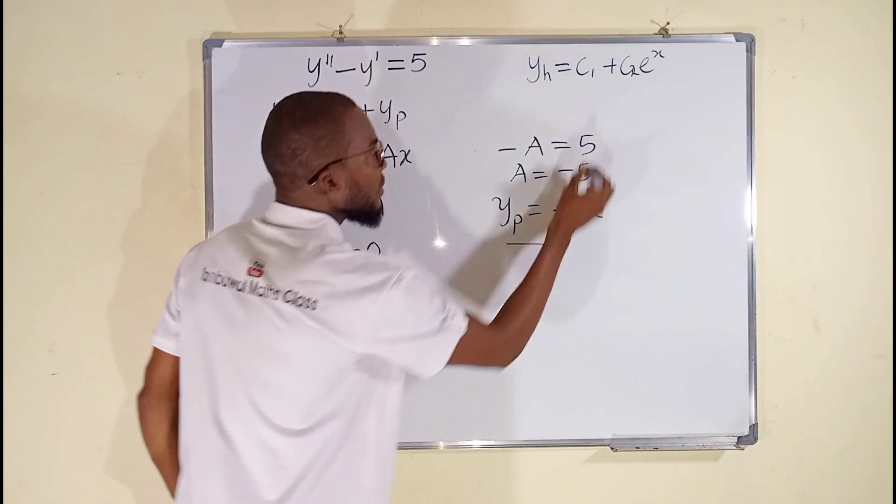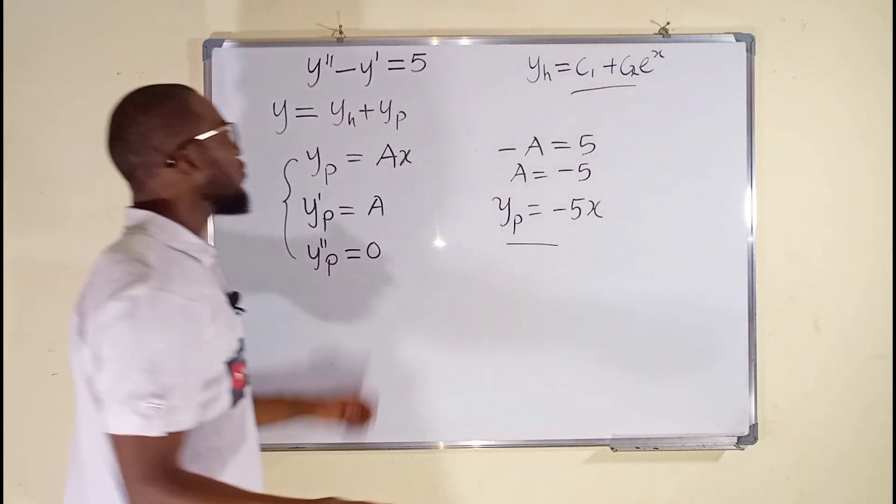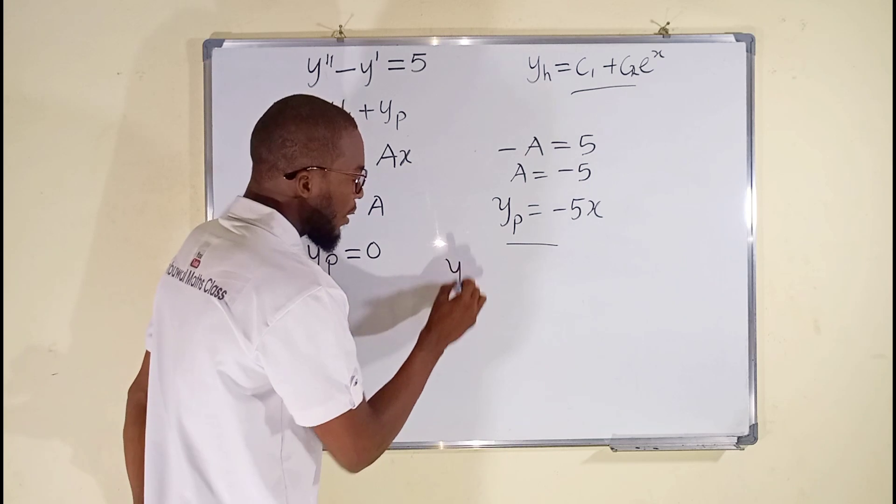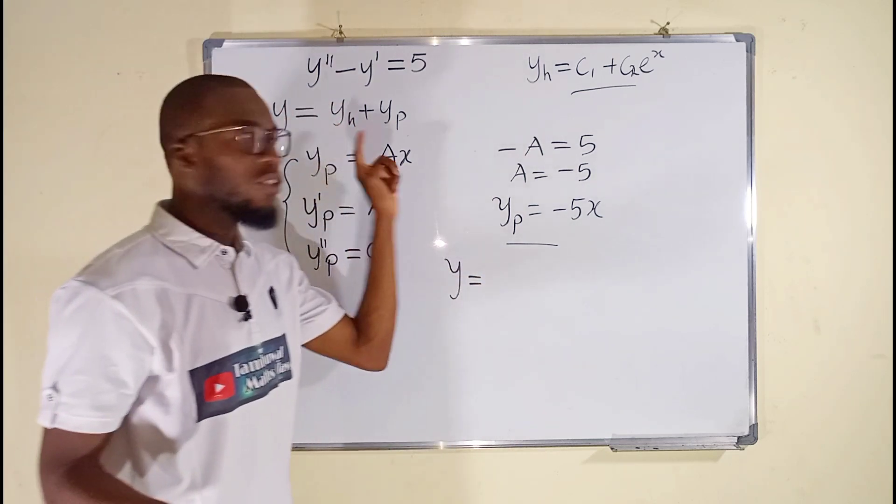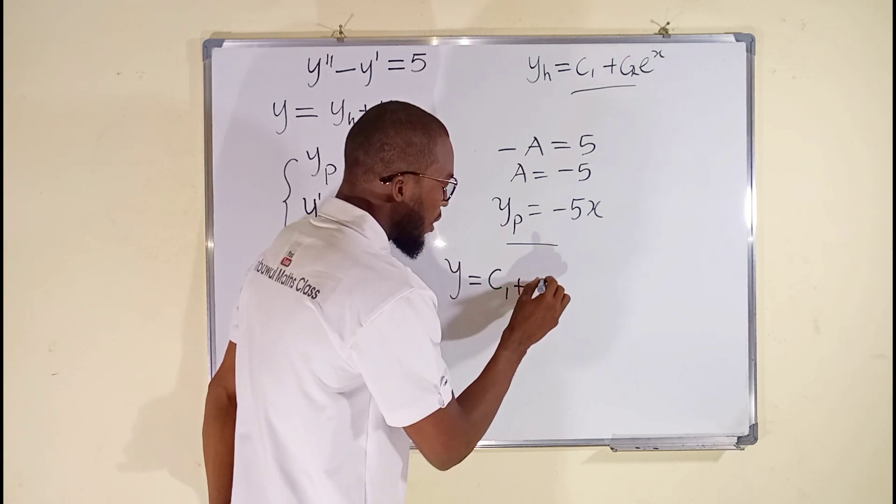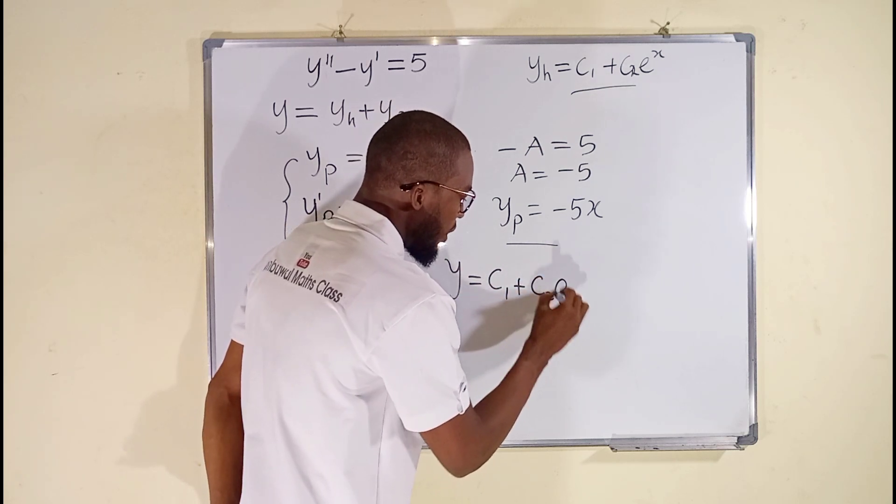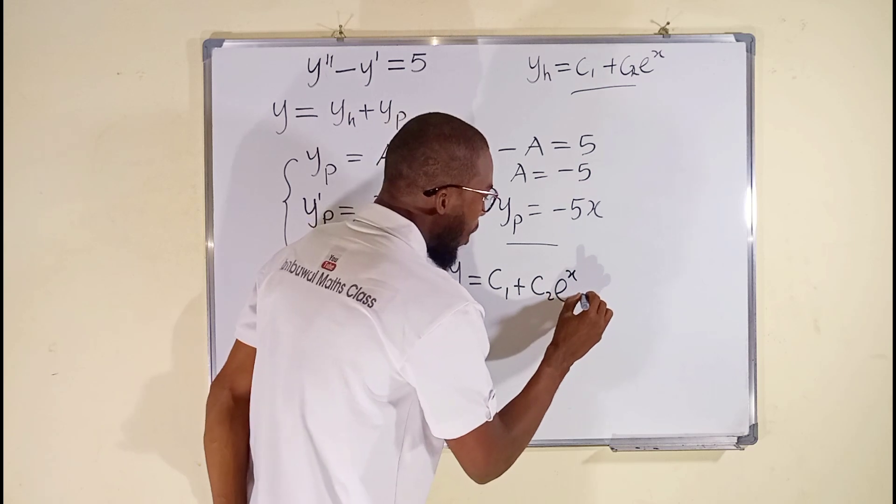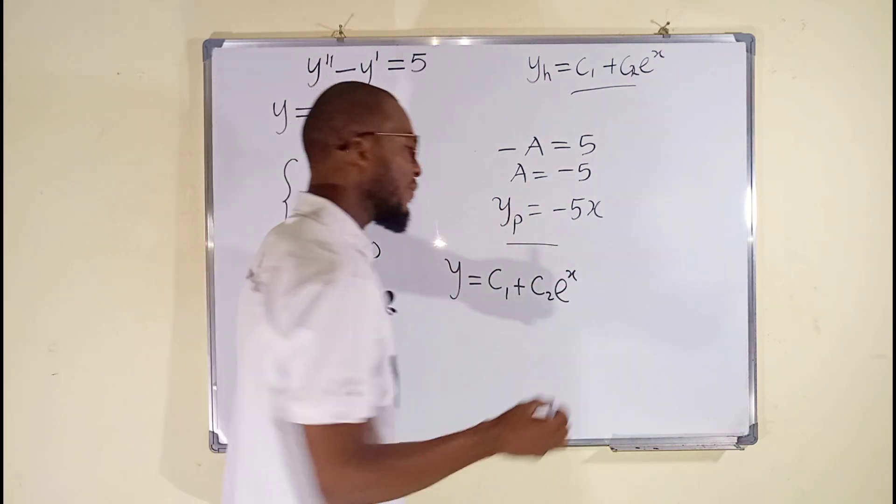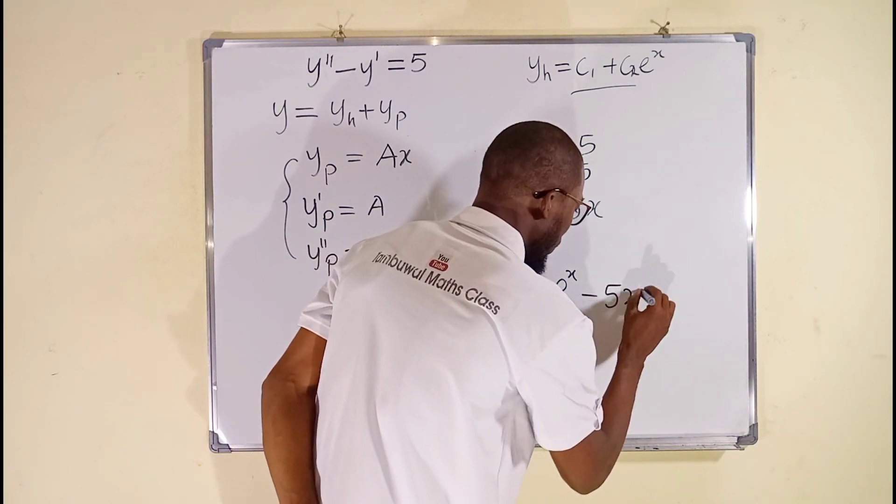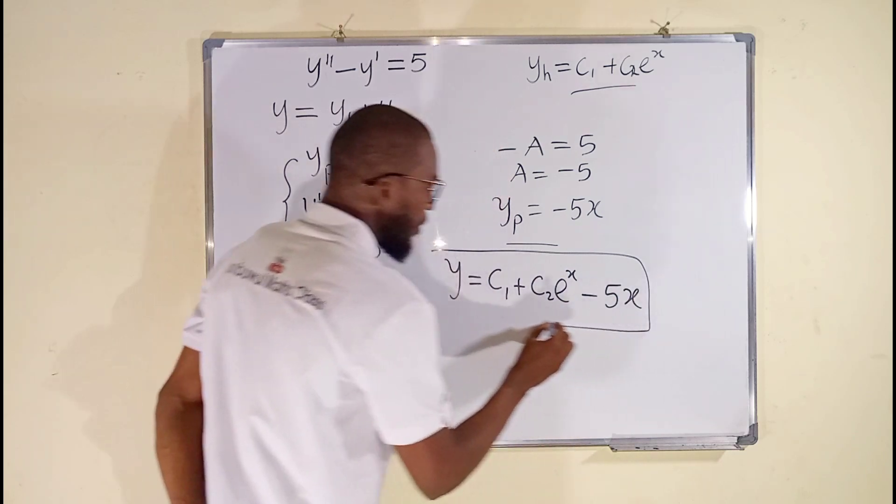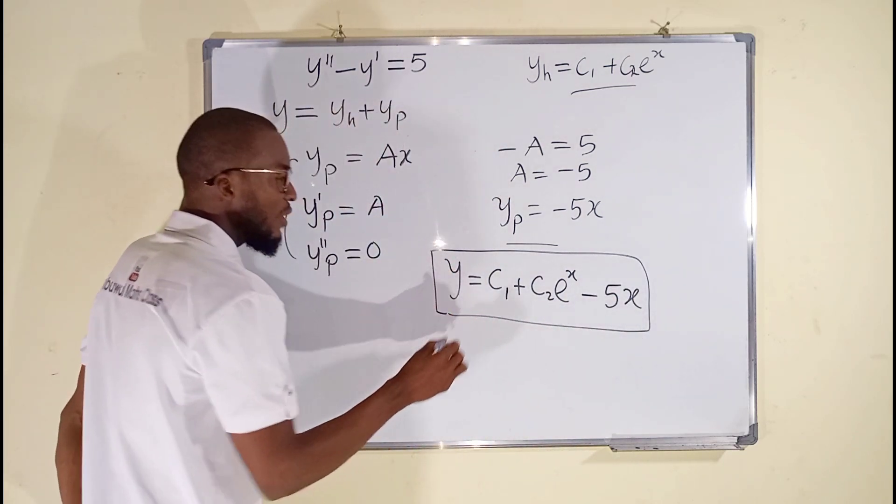And finally, we can substitute this and this into y to obtain the general solution. Therefore, y will be equal to y sub h, which is a constant, c1 plus another constant, c2, e to the x. Then you add y sub p, which we have as negative five x. And therefore, this is the general solution to this differential equation.